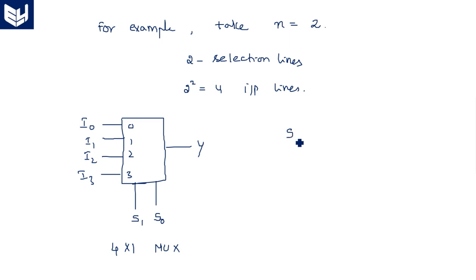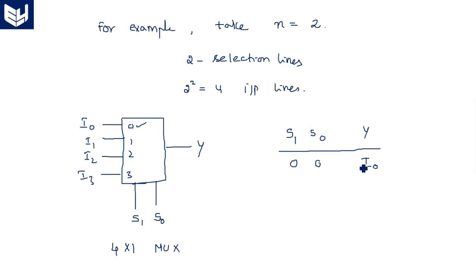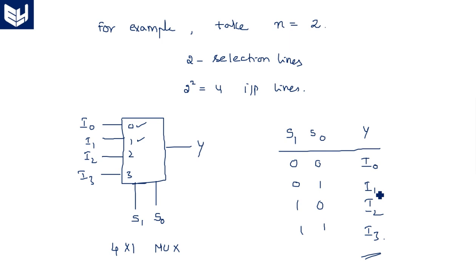For the operation of the 4 by 1 mux: when selection lines s1 s0 are 0 0, line 0 is selected and output y equals i0. When s1 s0 is 0 1 (binary 1), line 1 is selected and output is i1. Similarly, 1 0 gives i2 and 1 1 gives i3. This is the truth table for a 4 by 1 multiplexer.